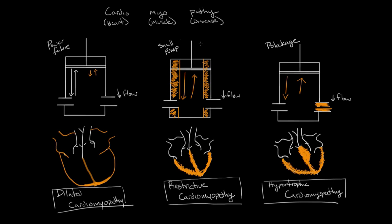To recap: cardiomyopathy is a disease of the heart muscle that results in decreased outflow of blood from the heart. It can be caused by three mechanisms: a pump failure as in dilated cardiomyopathy, a pump that's too small as in restrictive cardiomyopathy, or a blockage of blood outflow from the heart as in hypertrophic cardiomyopathy.